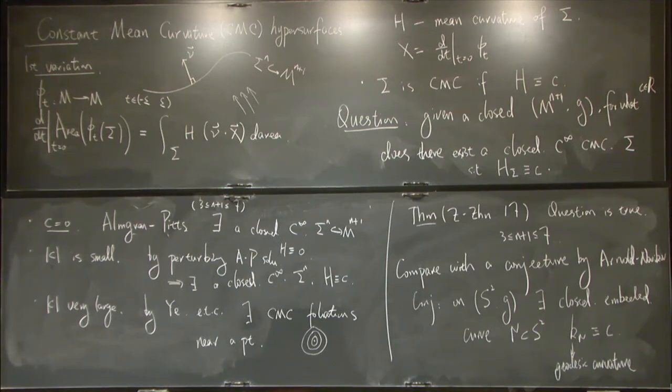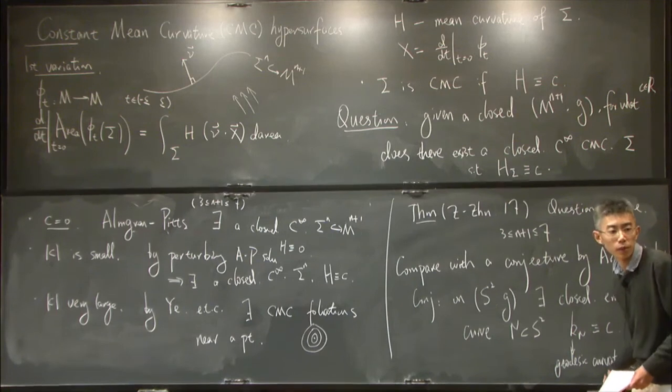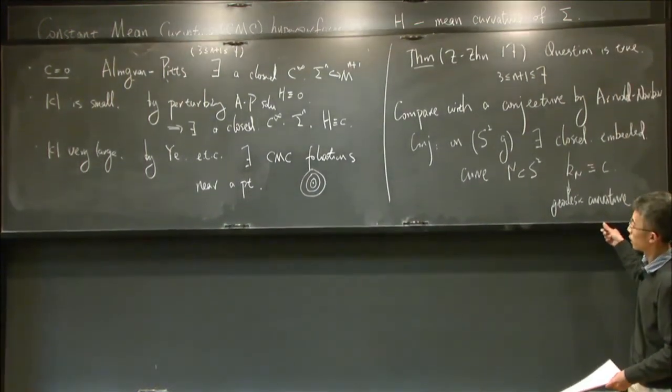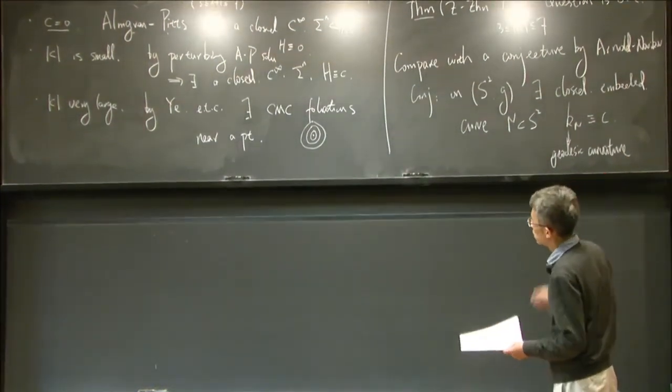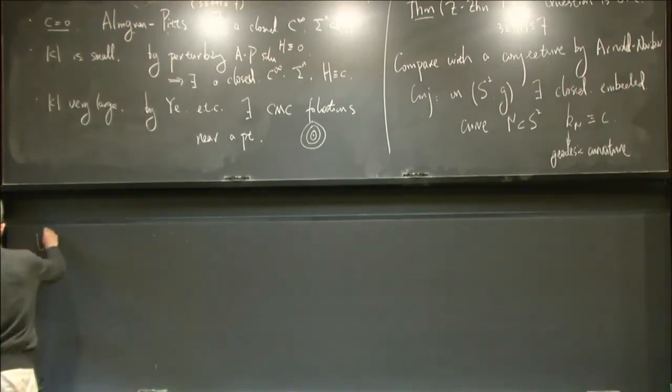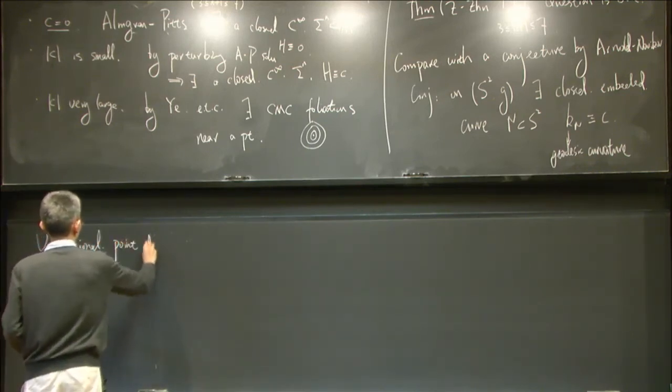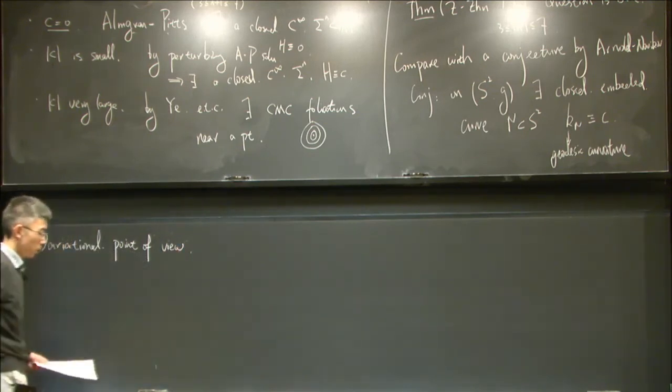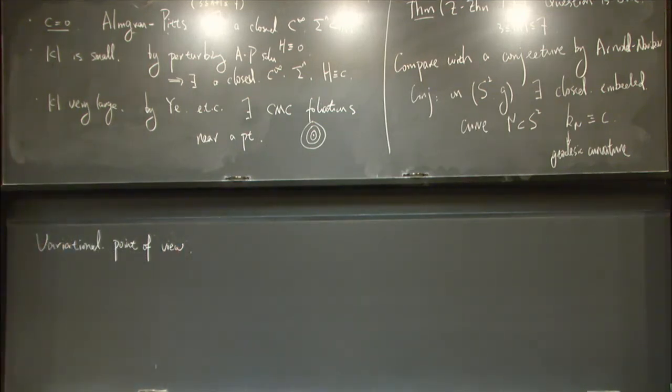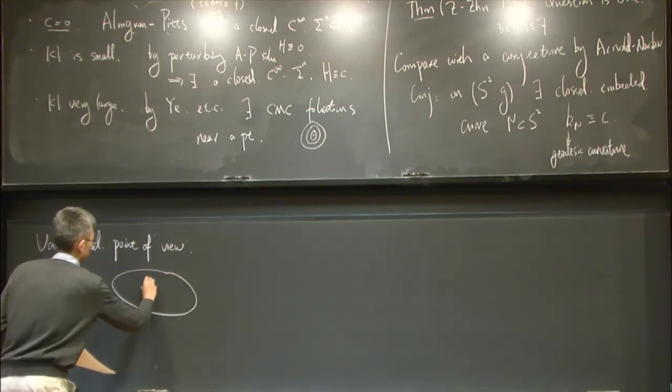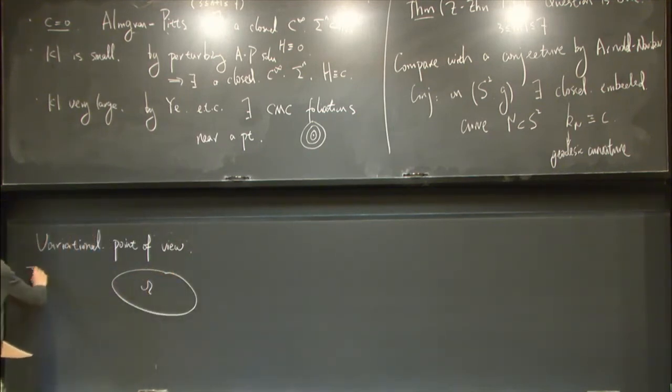Let me say a few words about the basic idea to approach our result. So we start with the variational point of view. Particularly if the hypersurface sigma bounds a domain, if sigma is the boundary of some domain, we look at the following weighted functional. This number C is the C in the question.